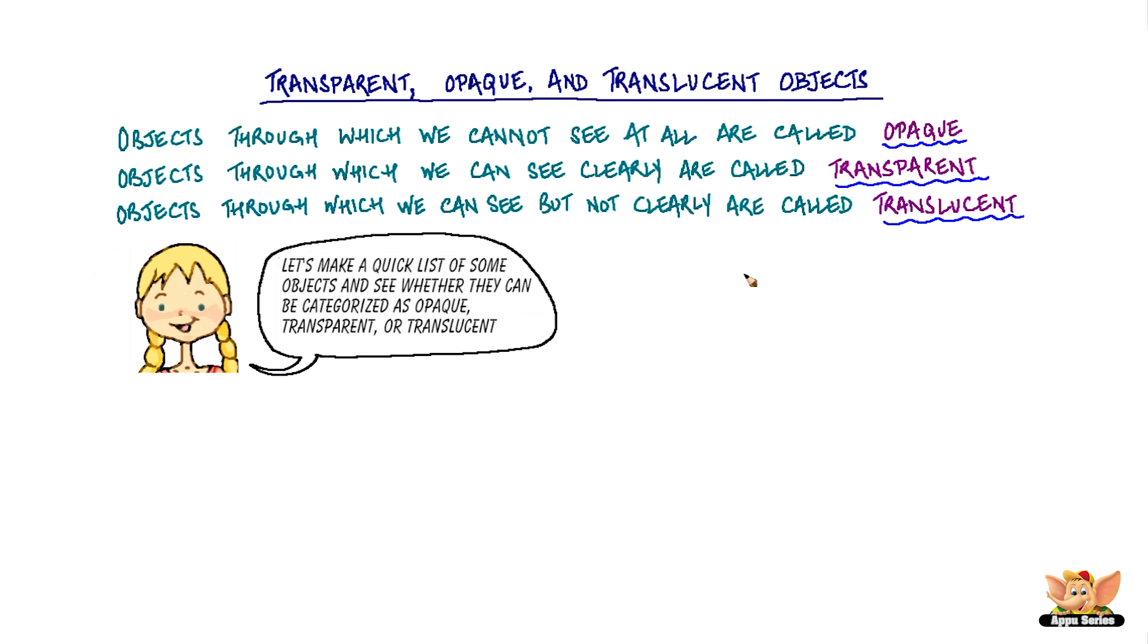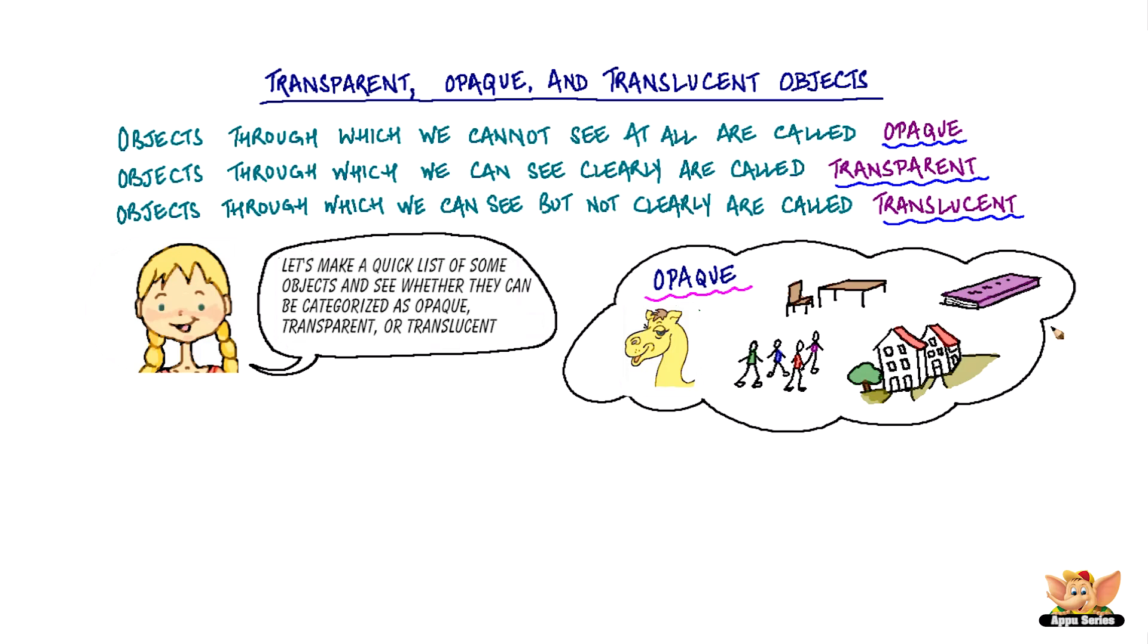Let's make a quick list of some objects and see whether they can be categorized as opaque, transparent or translucent. Chair, table, books, animals, people, buildings are all opaque objects that do not allow light to pass through them.